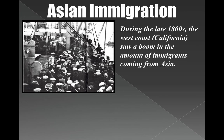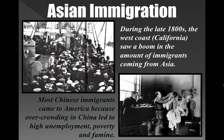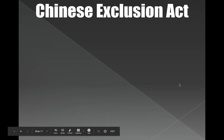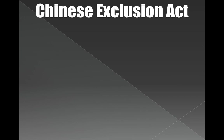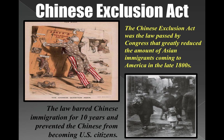Asian people were one group that really got blamed for a lot of problems. When you come from Germany, you can't be identified if you don't open your mouth, but it's hard to hide your Chinese or Asian identity. During the late 1800s, a lot of Asian immigrants came into the West Coast. Many left China because of overcrowding, high unemployment, poverty, or famine. So many Chinese immigrants were coming in that they actually passed the Chinese Exclusion Act, which barred immigration from China for 10 years and barred anyone already here from becoming a U.S. citizen.